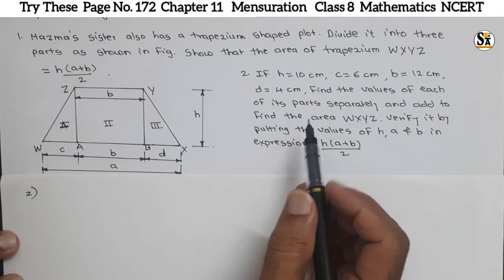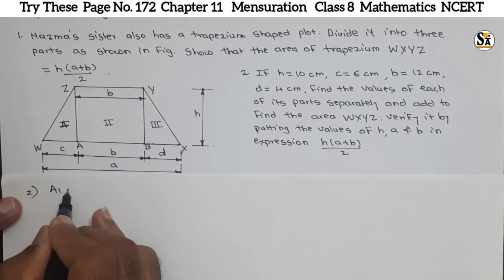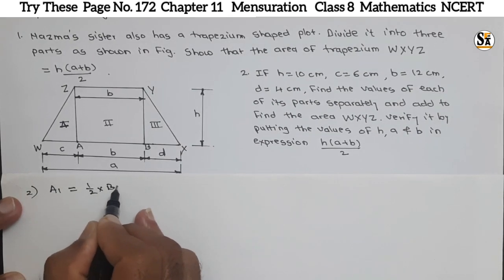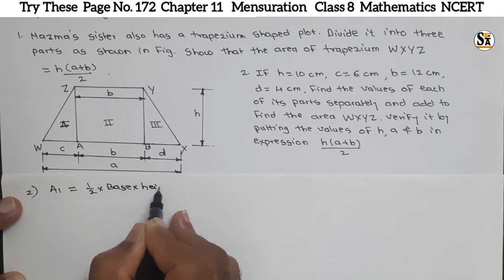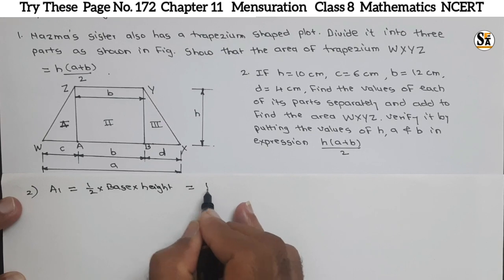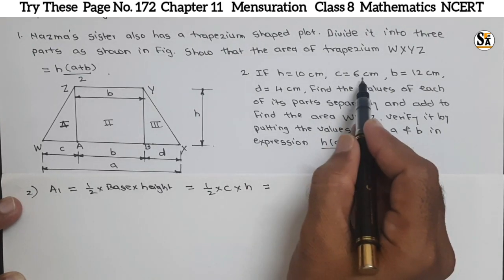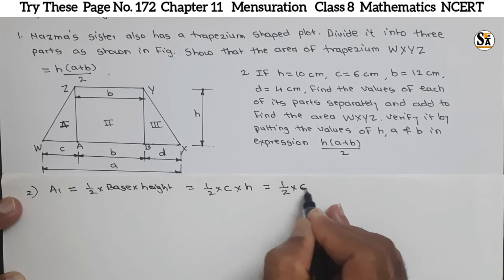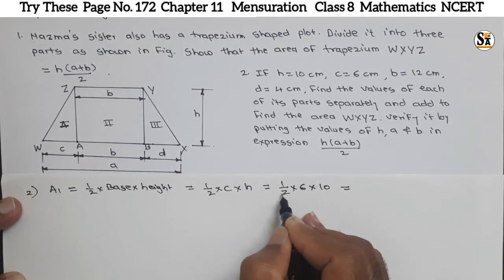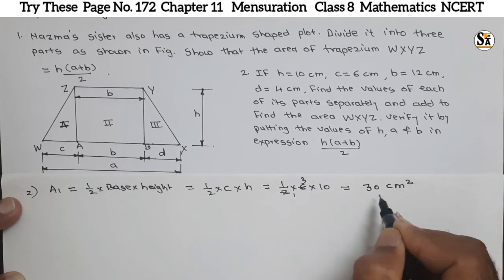Now let's calculate. A1 is the area of the first triangle. We know the formula: 1/2 into base into height. For the first triangle, base is C. So A1 = 1/2 × C × H. C is given as 6 cm and H is given as 10 cm. So A1 = 1/2 × 6 × 10 = 30 cm².